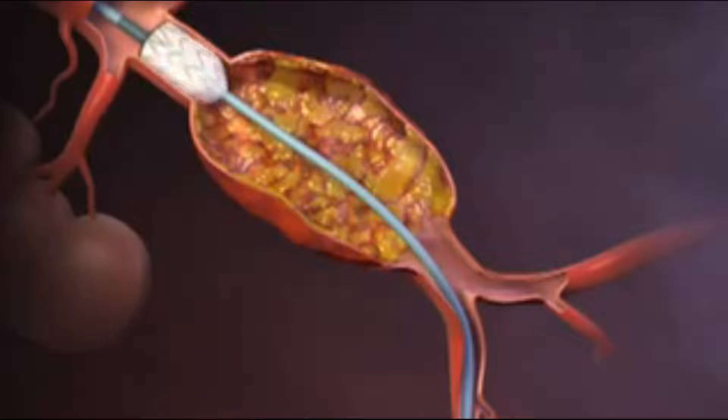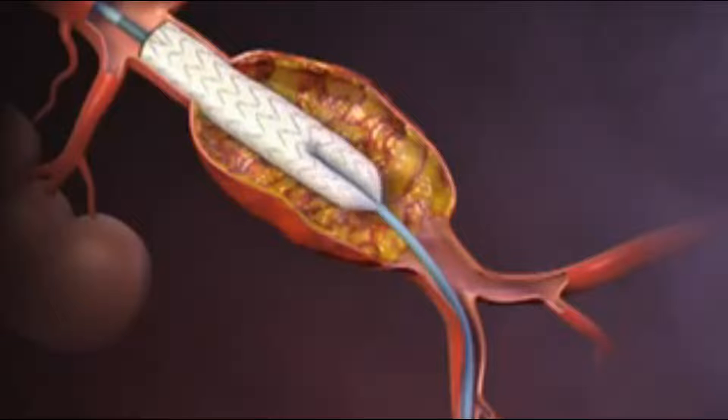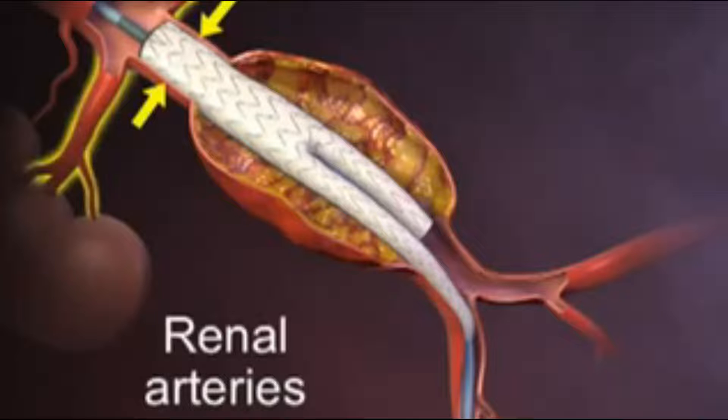The body of the stent graft, composed of a non-permeable polyester material supported by a self-expanding flexible metal frame, is partially deployed, with the undeployed upper portion of the device positioned immediately below the renal arteries.